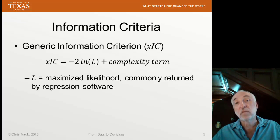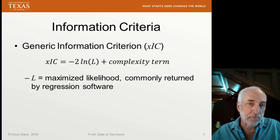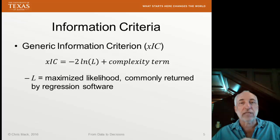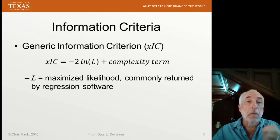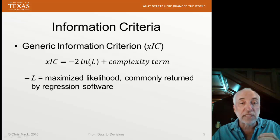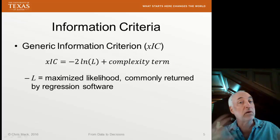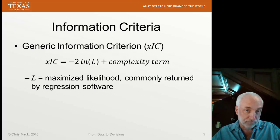The other way we'll do it, and really a better way, is something called the information criteria. Generically, the information criteria is minus 2 times the log of the maximized likelihood, plus some term that penalizes our model for being overly complex. All right, let's parse this a little bit.